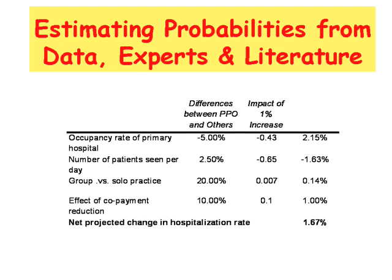We can see that the net impact of various events — like occupancy rate of primary hospital, number of patients seen per day, group versus solo practice, and effect of copayment reduction — is estimated to be a 1.67% increase in hospitalization rate.